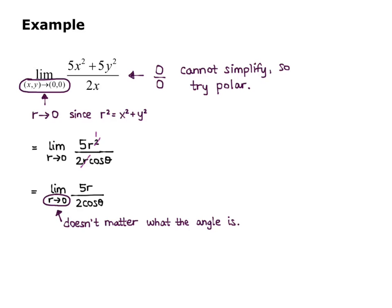All I care about is r, so I can plug in my 0 for r, and I get 5 times 0 over 2 cosine theta, which is just 0, because 0 over any other number is 0.